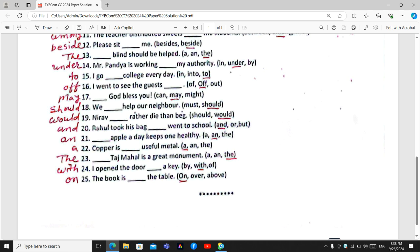Number 23. The Taj Mahal is a great monument. The Taj Mahal is a unique one, so we will put here the article the Taj Mahal. Number 24. I opened the door with a key not by the key but with a key. Number 25. The book is on the table. It is touched the table and on the table we cannot say here over or above but it is on the table. I hope that you can understand all the correct answers here.